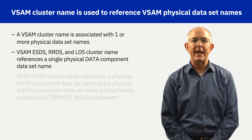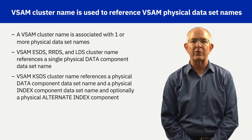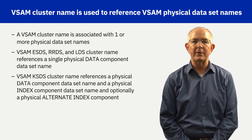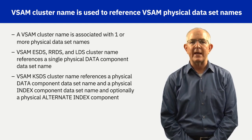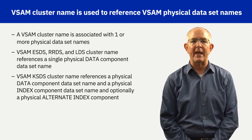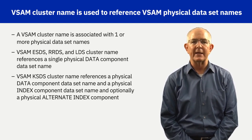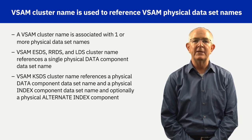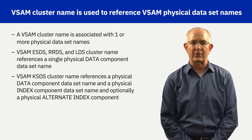However, a KSDS cluster name references at least two physical dataset names — the data component and the index component. A KSDS can optionally include a physical alternate index component that is referenced as part of the VSAM KSDS cluster, in addition to that primary index component.